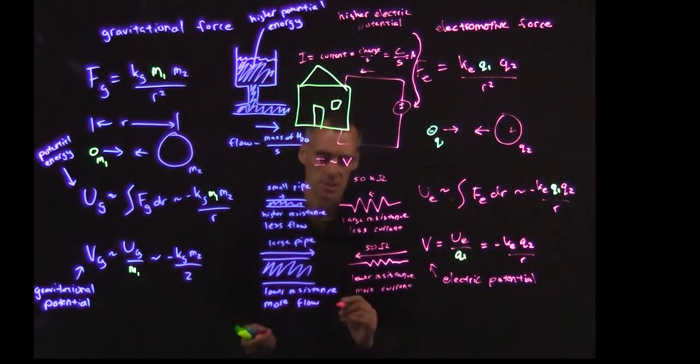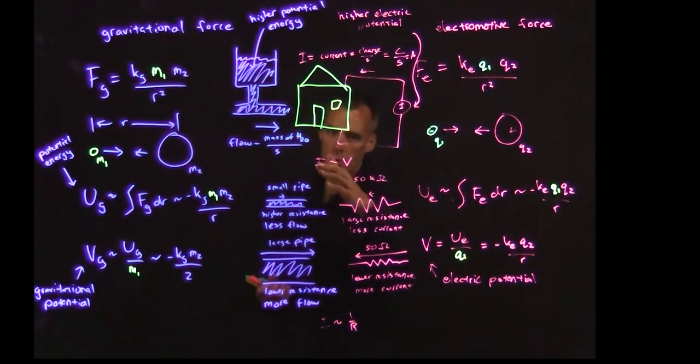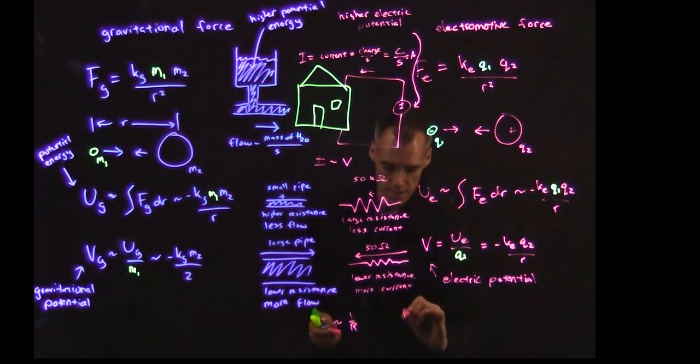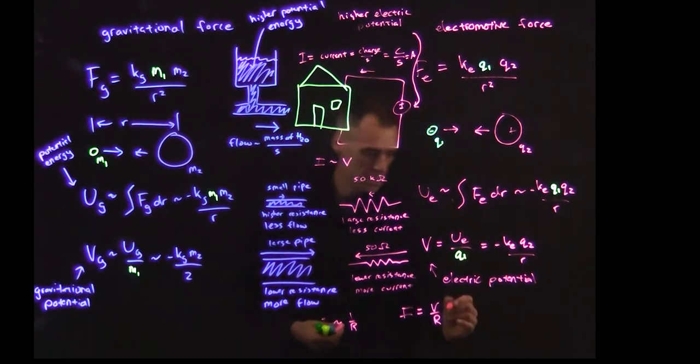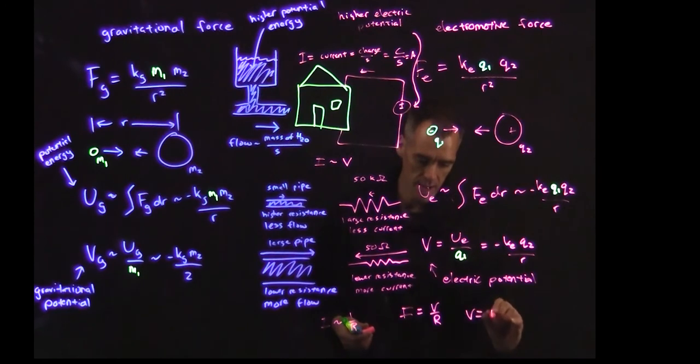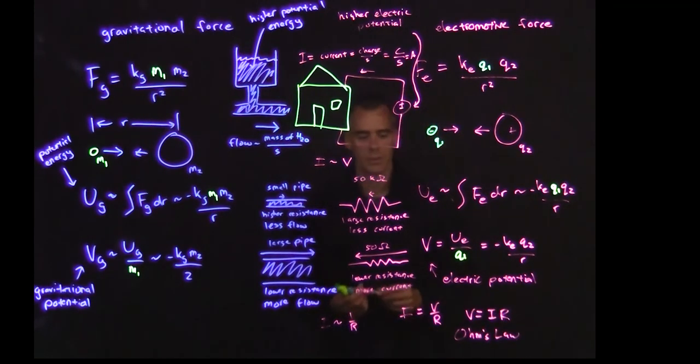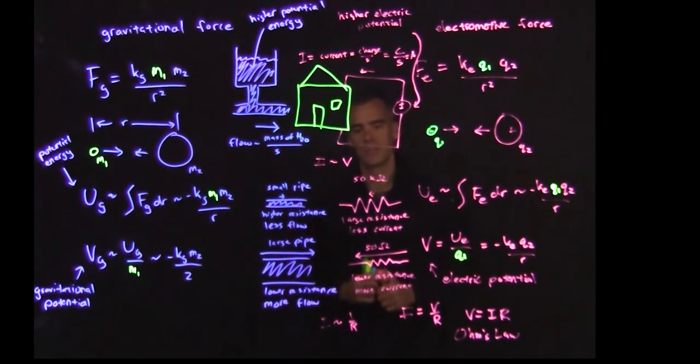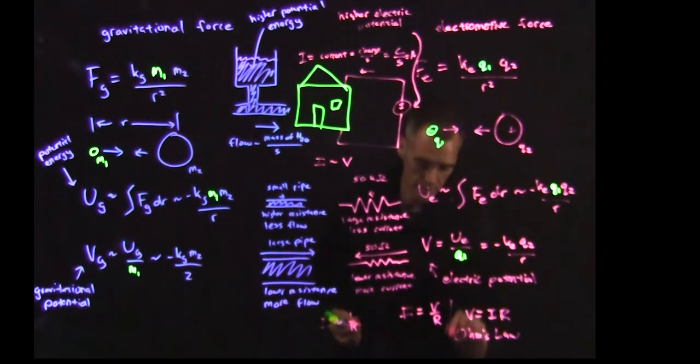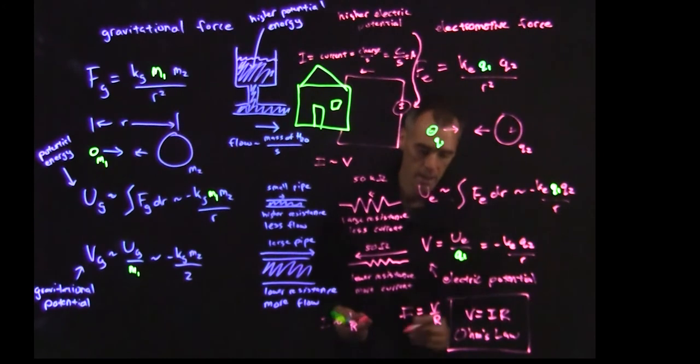And so you get this basic relationship here where your current is going to be proportional to one over R. So we've got, we know that current is proportional to voltage. It's also inversely proportional to resistance. So we end up with the equation I equals V over R, which is a little bit easier to write as V equals IR, which is Ohm's law. And this is something that if you forget everything else about electrical engineering, this is the last thing that you're going to forget, the most basic fundamental equation that we'll use.